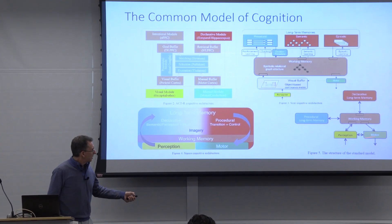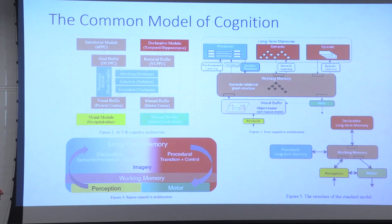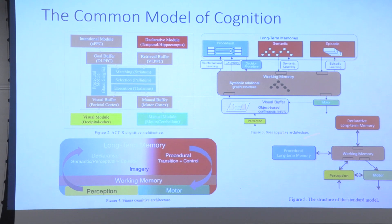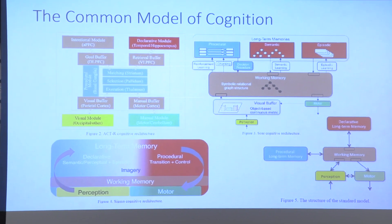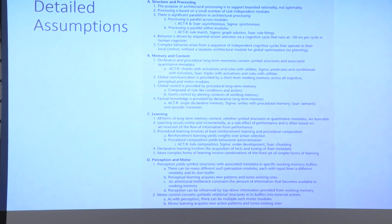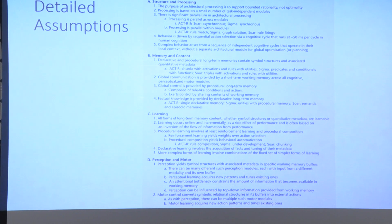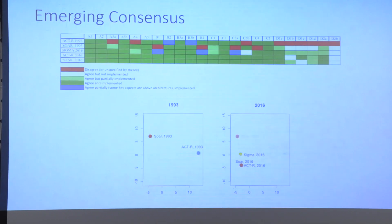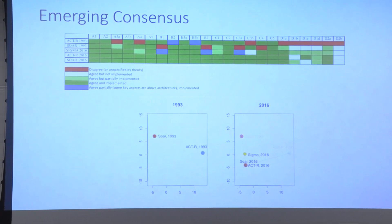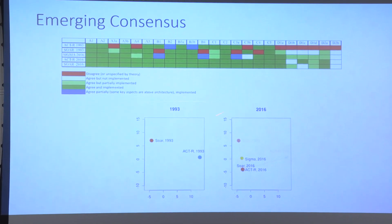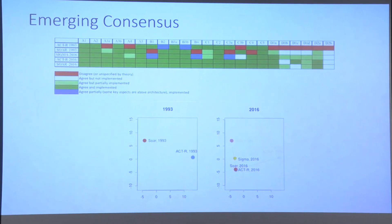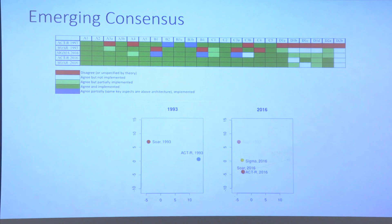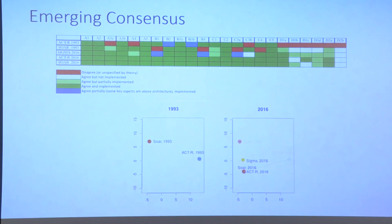The general diagram of the common model includes obvious things like working memory, declarative and procedural long-term memory, perception and action. There are much more detailed assumptions about the grain scale of processes, how those modules interact, and what the learning processes are. A regression analysis shows considerable progress in the last 25 years, gradually learning what in this complex space of cognitive architecture design actually maps to human cognition.